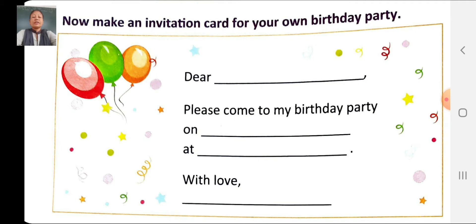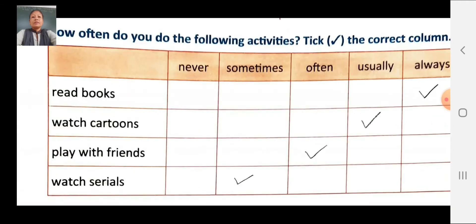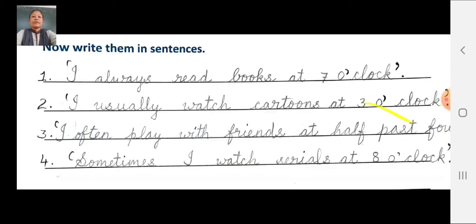With love, dash — write your name. Next exercise: how often do you do the following activities? Tick the correct column. Options are: never, sometimes, often, usually, always. Examples given: read books, watch cartoons, play with friends, watch serials. You have to make a sentence for each activity and tick the correct column.